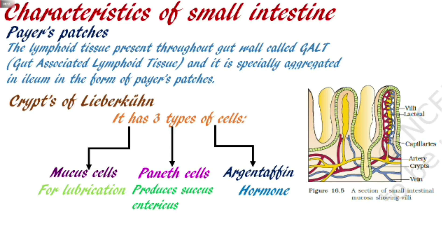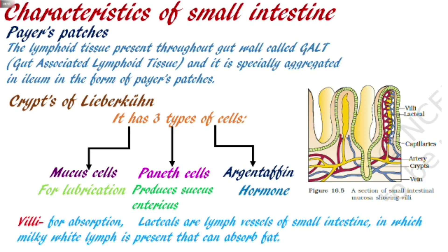The third characteristic is absorption-related, and that is villi. In the small intestine, the mucosal layer develops finger-like projections called villi. Within these villi, there are further micro-projections called microvilli. The biggest purpose of both villi and microvilli is to increase the surface area. When the surface area increases, absorption increases. This is why this modification developed.